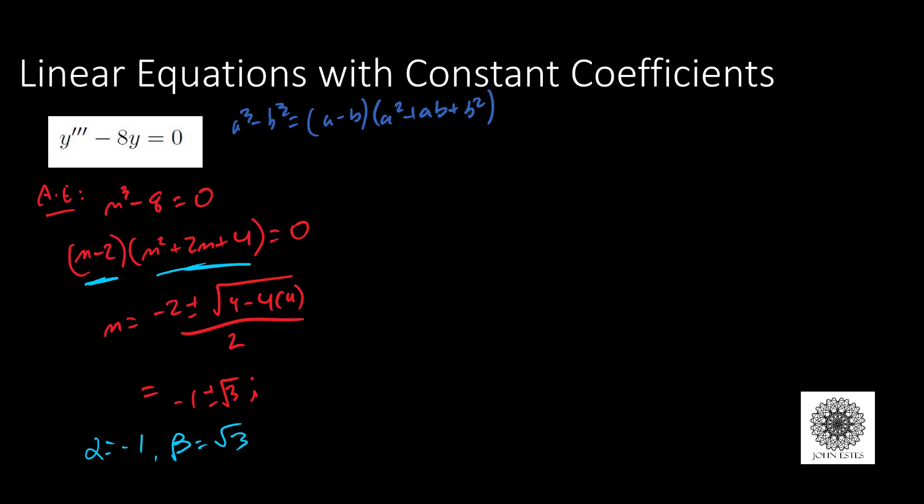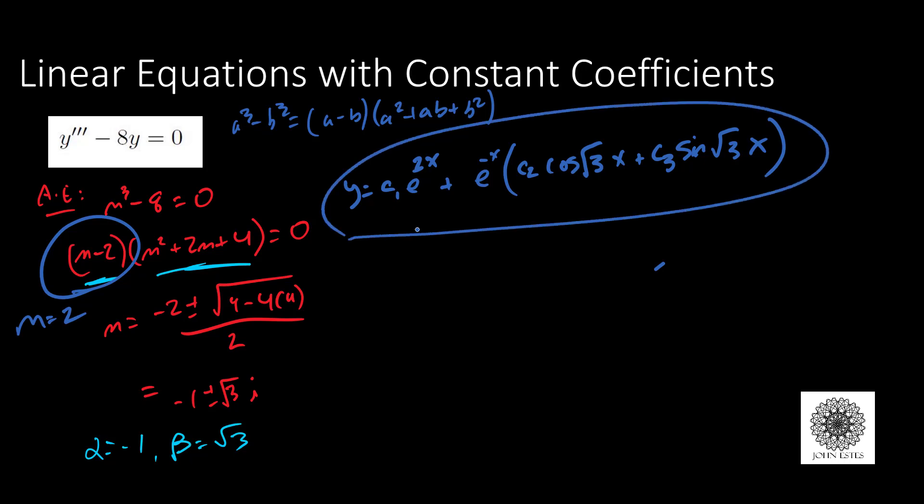My general solution for this equation: first it's c1 e to the 2x power, which comes from the root m equals 2. That's a distinct real root, case 1. For the rest I factor out e to the alpha, so here's e to the negative x times c2 cosine root 3 x plus c3 sine root 3 x. There's my general solution. If you can factor polynomials, these equations are not very difficult.